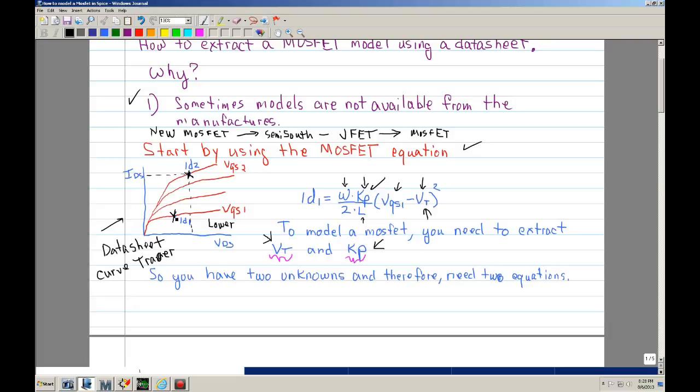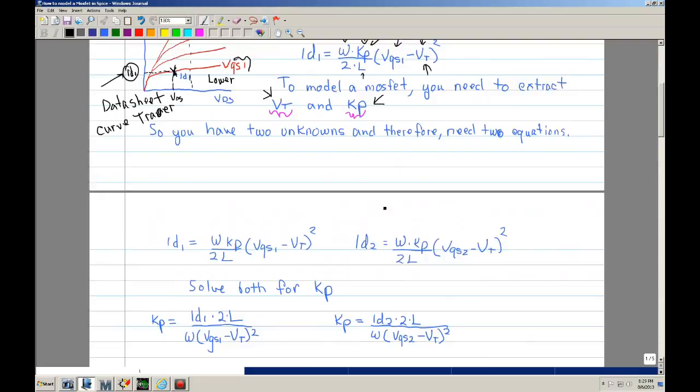We pick two parameters. We can call this ID1. And where it intercepts here, that would be your ID1. And this would be your VDS. And then the voltage that you set up from gate to source, that would be your other. So basically, you want this and this parameter. And then of course, you have ID2 and then your second VGS voltage. So once you have those two points, you get two equations.